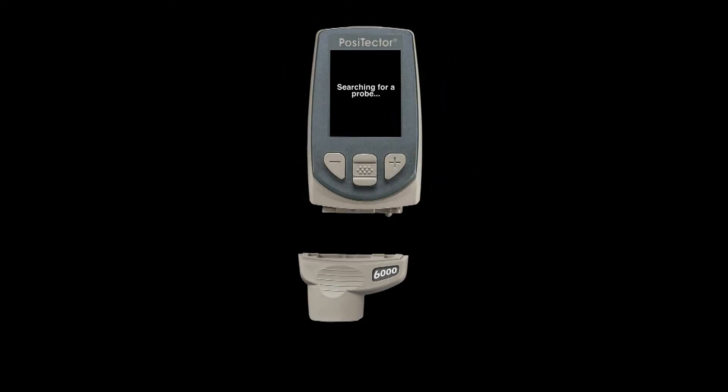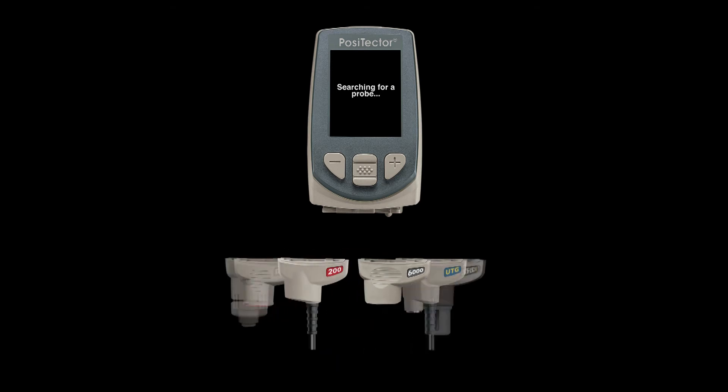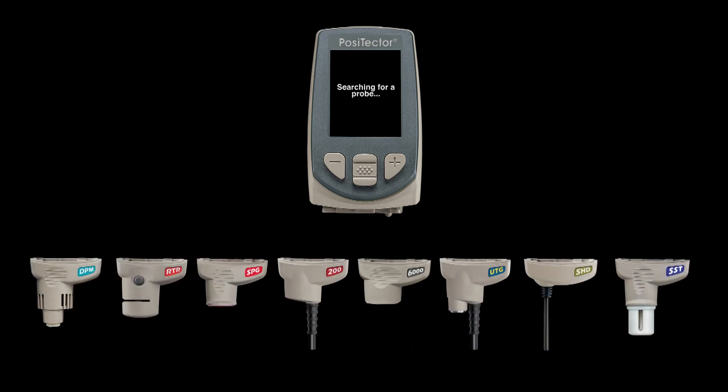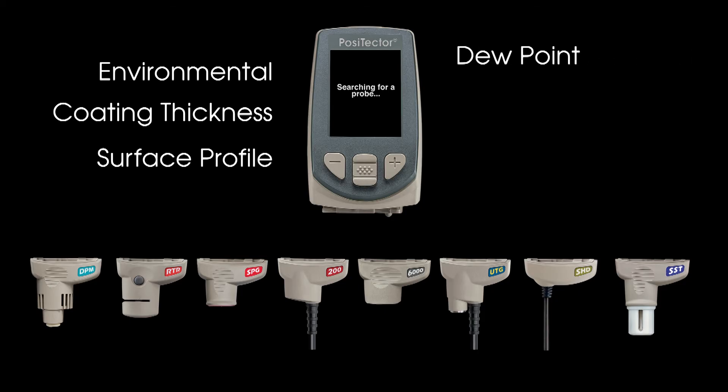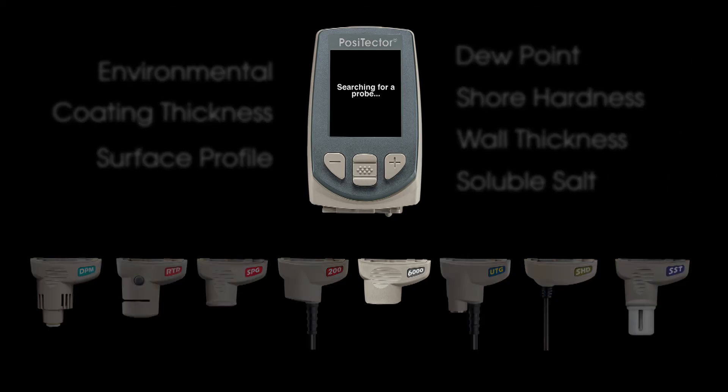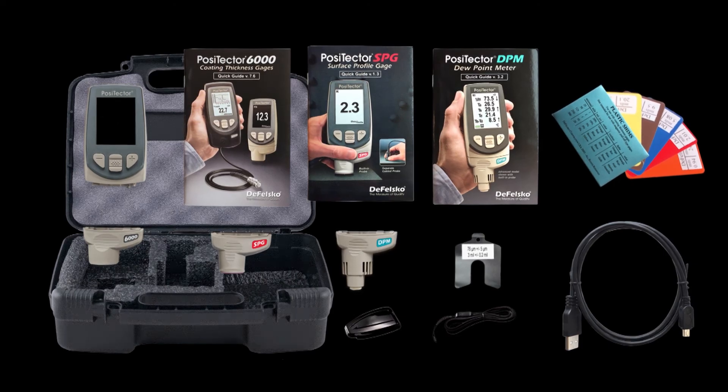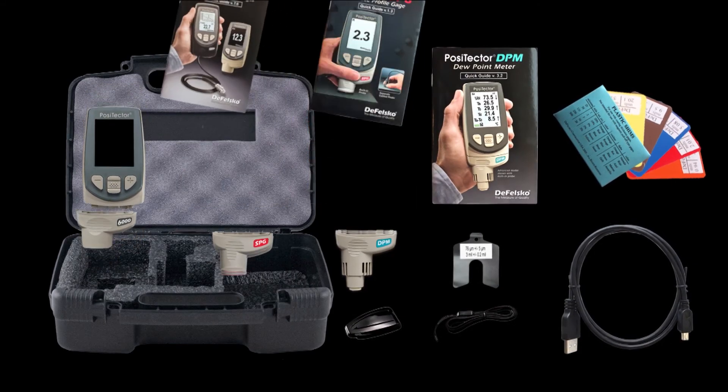The Positector 6000, 200, and PC probes connect to the award-winning Positector platform, allowing a single gauge body to accept environmental, coating thickness, surface profile, dew point, shore hardness, wall thickness, and soluble salt probes. They are an ideal addition to a Positector inspection kit.